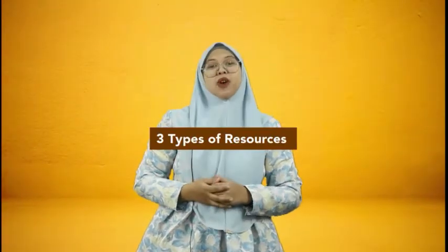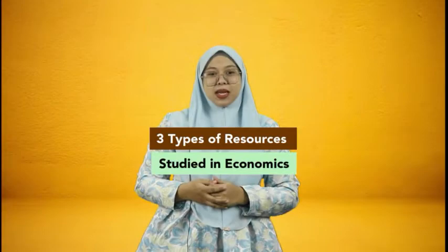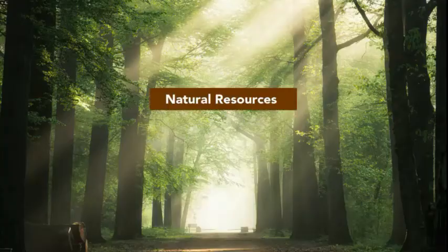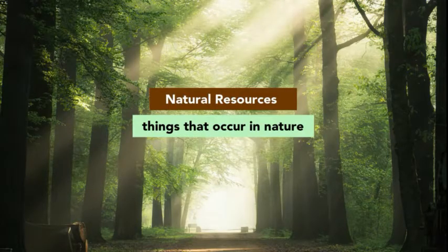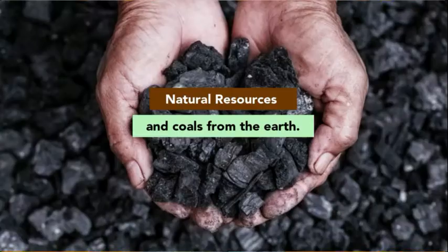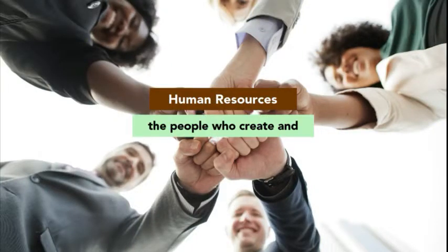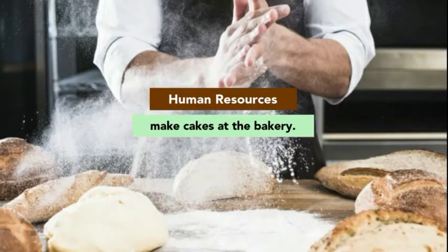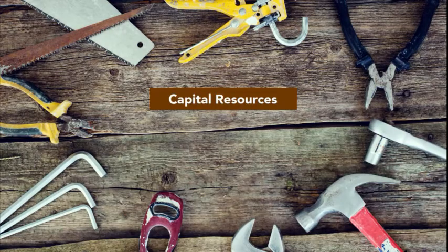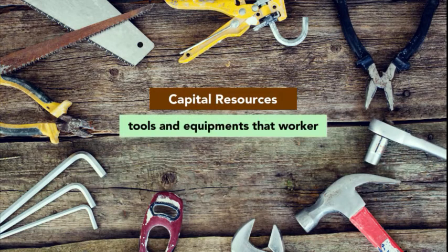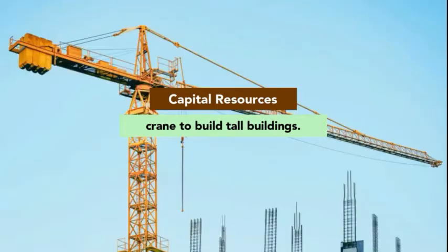Let's move forward to three types of resources studied in Economics. The first one is natural resources, which are things that occur in nature, like wood from trees and coal from the earth. The second one is human resources, which are the people who create and make items for artists to use. The third one is capital resources, which are tools and equipment that workers use to make things, like a crane to build tall buildings.